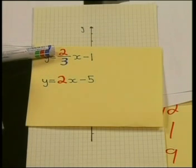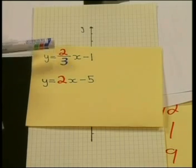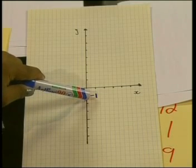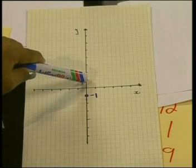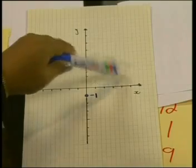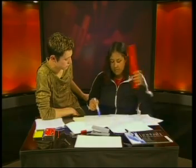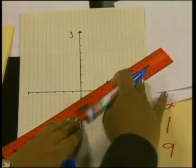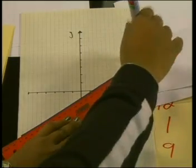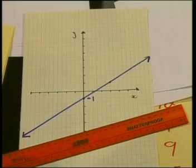The gradient is 2/3. The numerator shows how much the y value changes, while the denominator shows how much the x value changes. From the point on the graph, we go up 2 units and 3 units to the right. So we start at negative 1 on the y-axis, go up 2 units, then move 3 units in the positive x direction. The point where we end up lies on the graph. Since the equation is linear, we draw a straight line through the two points to complete the graph.